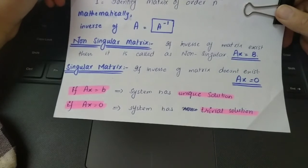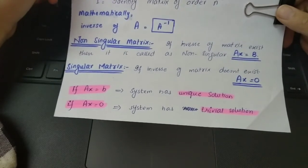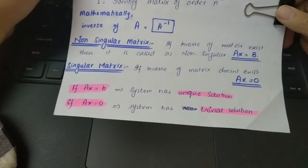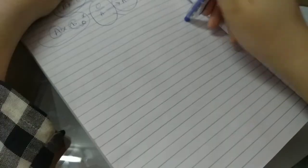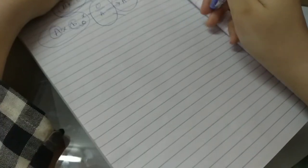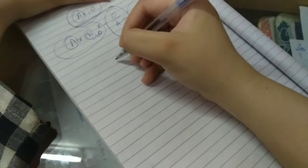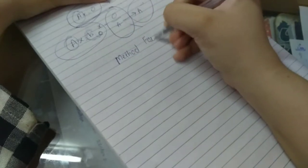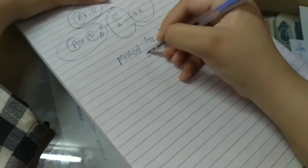Now I will show you an example so you can understand. If you understand, I will show you the example and the steps — you will easily understand. One important thing is how to find the inverse of a matrix. Let's look at the method for finding the inverse.